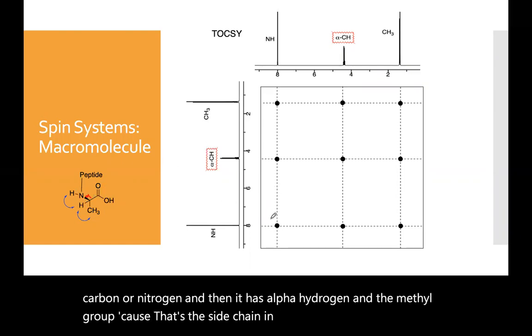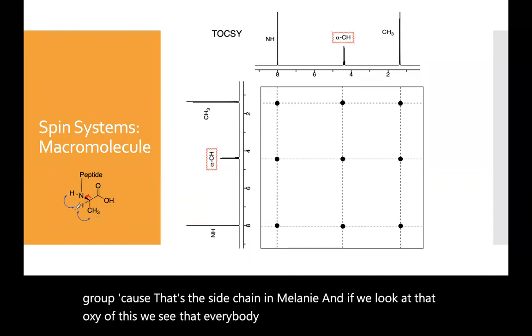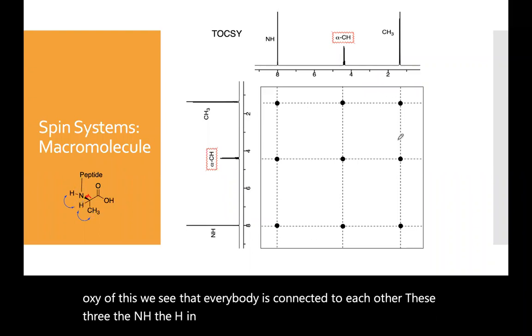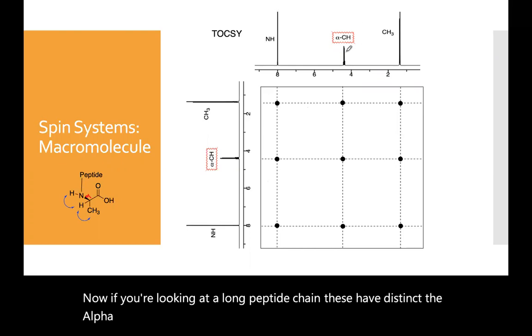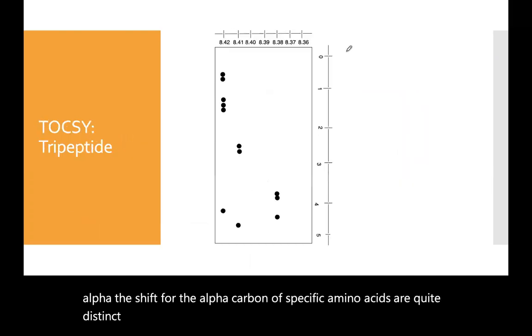And if we look at the TOCSY of this, we see that everybody is connected to each other. These three, the NH, the H, and the methyl group. So you see the full connectivity. Now, if you're looking at a long peptide chain, the alpha, the shift for the alpha carbon of specific amino acids are quite distinct. And so are the NHs.